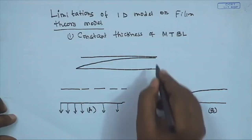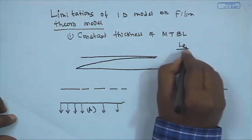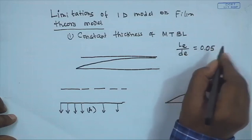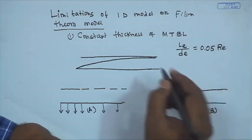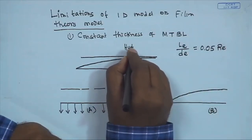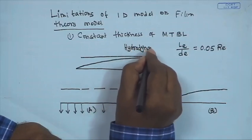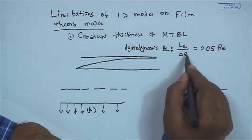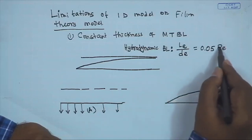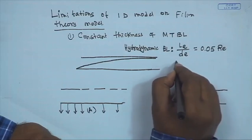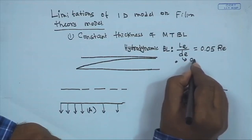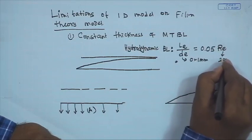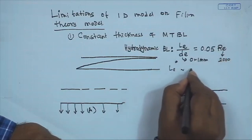In reality, assuming constant mass transfer boundary layer thickness is unrealistic. The entrance length for a hydrodynamic boundary layer is 0.05 × Reynolds number × d_e. If the equivalent diameter is on the order of millimeters and Reynolds number is around 2000 (laminar), the entrance length is on the order of a few centimeters — so for a 1-meter module, almost the entire channel has a fully developed hydrodynamic boundary layer beyond the first 4–5 centimeters.